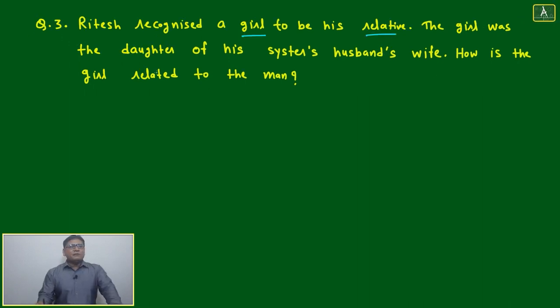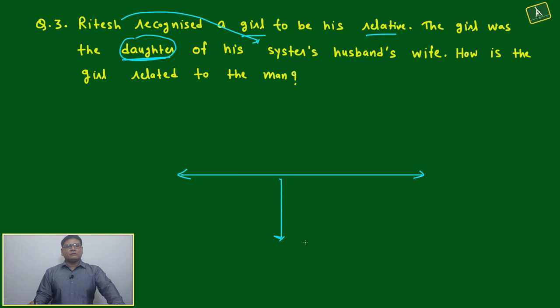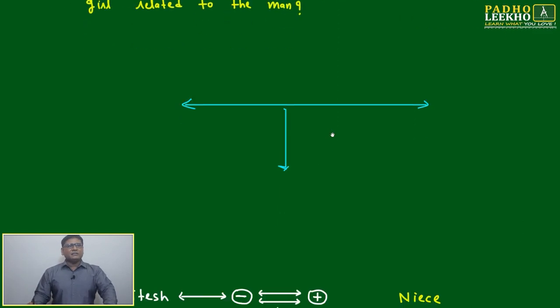Number three: Ritesh recognized a girl to be his relative. The girl was the daughter of his sister's husband's wife. Here, daughter is there, and the remaining relation is the same generation of Ritesh - Ritesh, sister, husband, wife - all are same generation. Only one generation is going down, that is daughter. This means the story is based on two generations. We have to make a tree diagram based on these two generations.